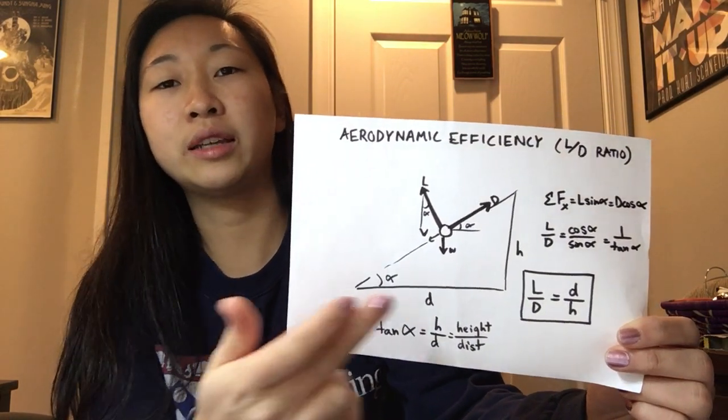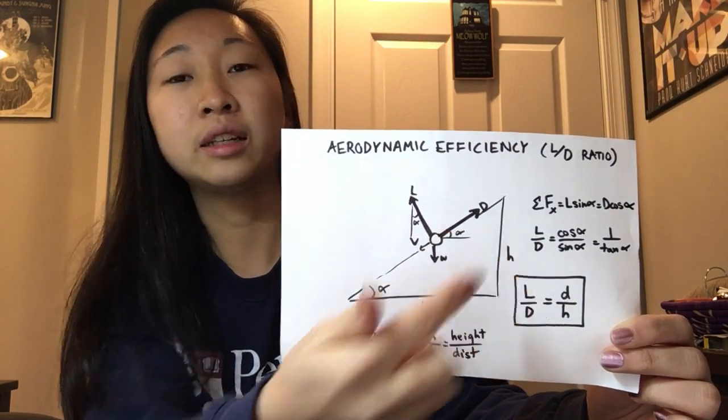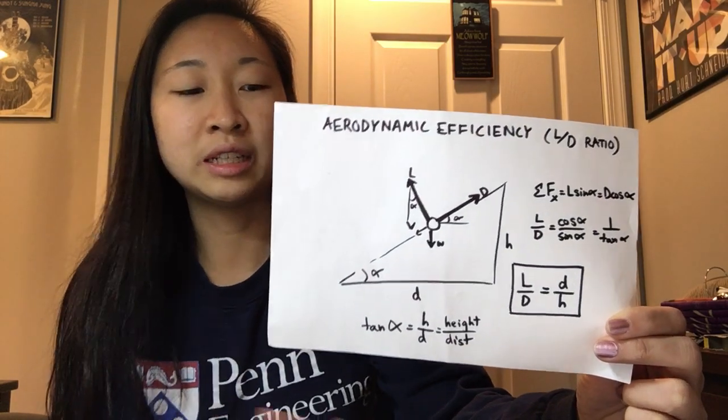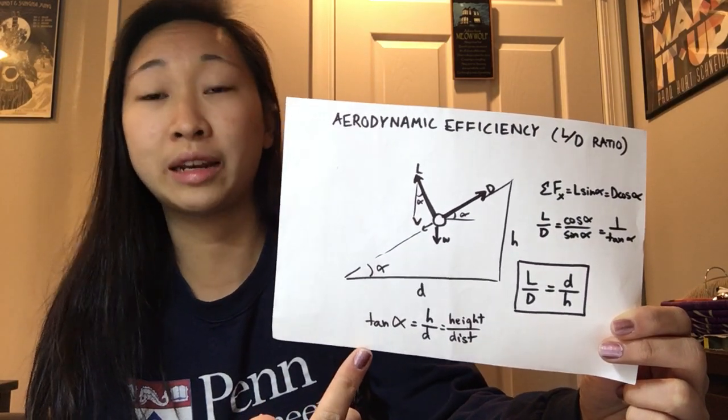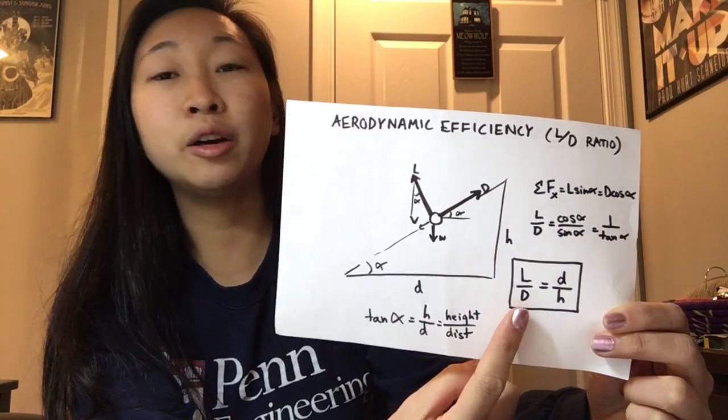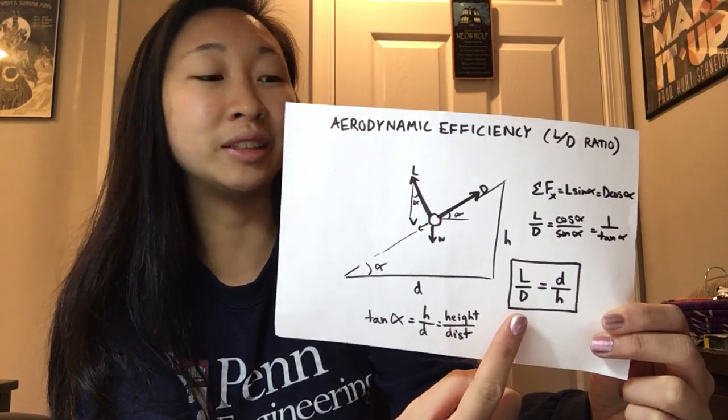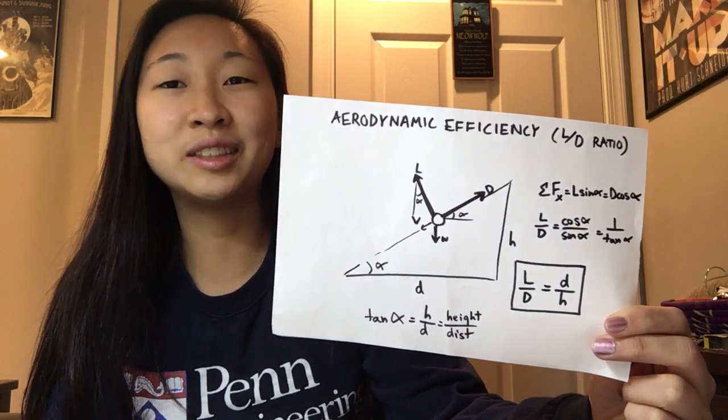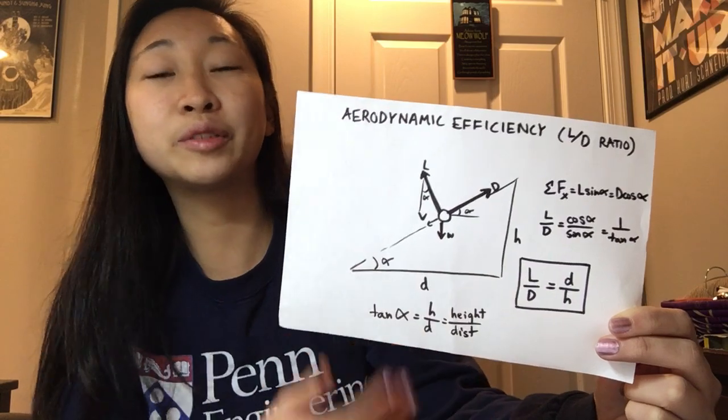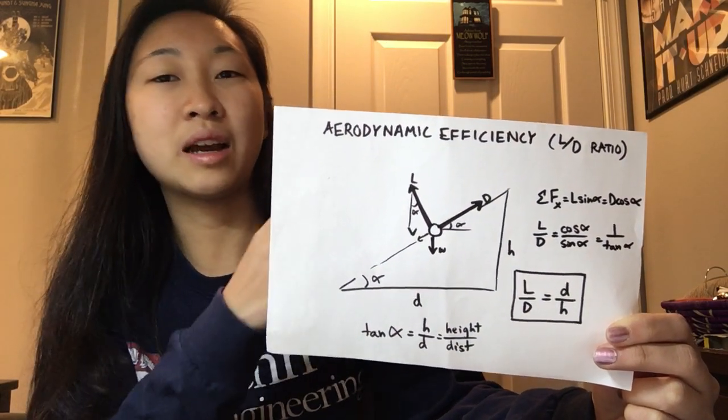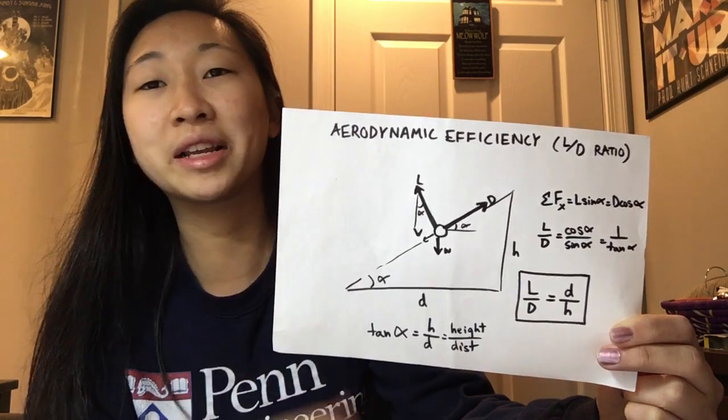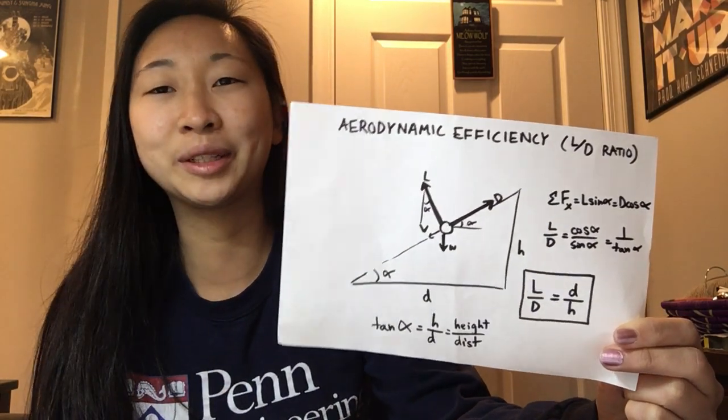Also note that you can see this larger triangle here. That's the height the glider starts at as well as the distance it travels, and that's related through tan alpha. Just a trick. You can do some algebra, rearrange it, and you end up with L over D is equal to D over H. And so aerodynamic efficiency can be clear to see here where lift over drag relates to how far your glider can fly starting at a certain height.